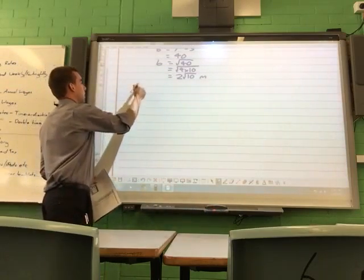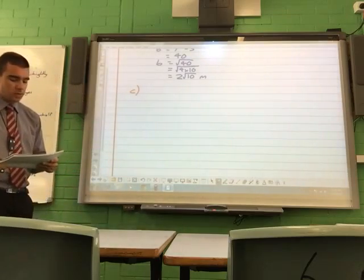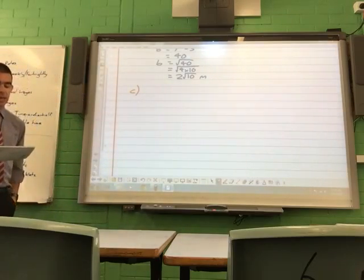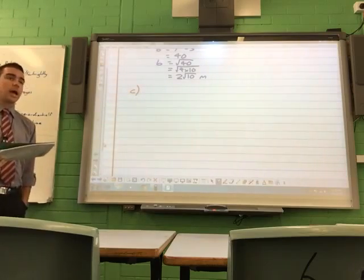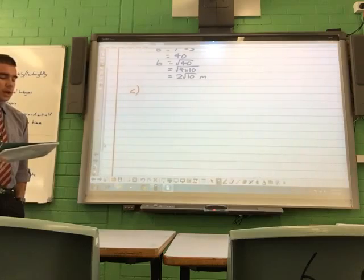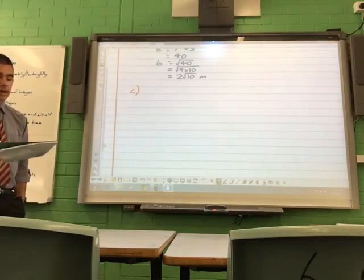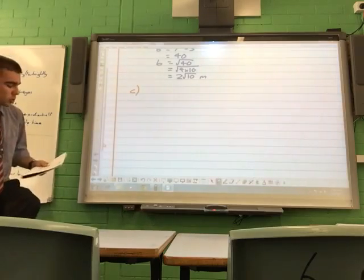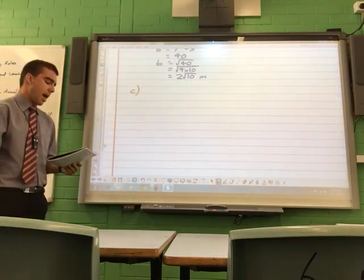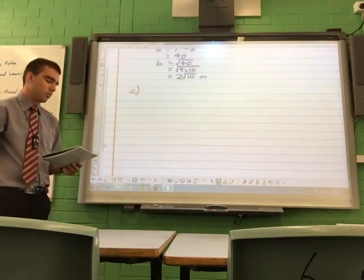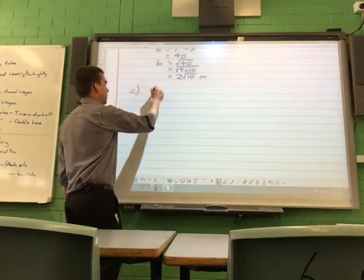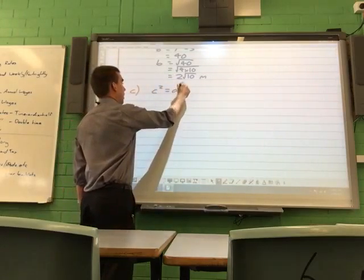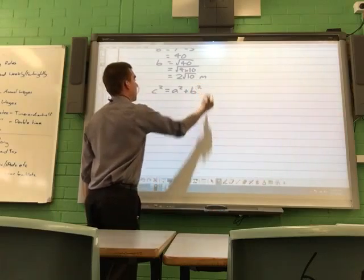And you get units as meters. Alright, c. The question reads, show that a triangle with sides 6 metres, 8 metres and 10 metres is a right angled triangle. So this goes back the other way. If the square of the hypotenuse, the square of the longest side, equals the sum of the square of the two shorter sides, we will have a right angled triangle.